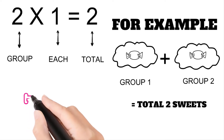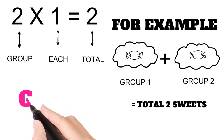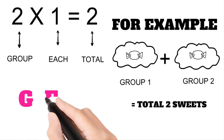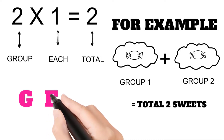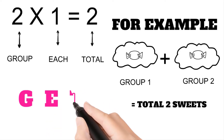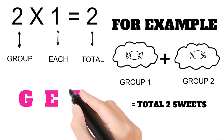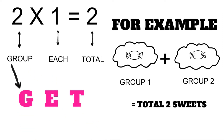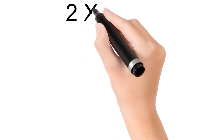If you cannot remember which one is group and which is each, take G from group, E from each, and T from total. These three letters together spell GET. If you can remember the word GET, then you can remember which is group and which is each. Now let's move to the next one.